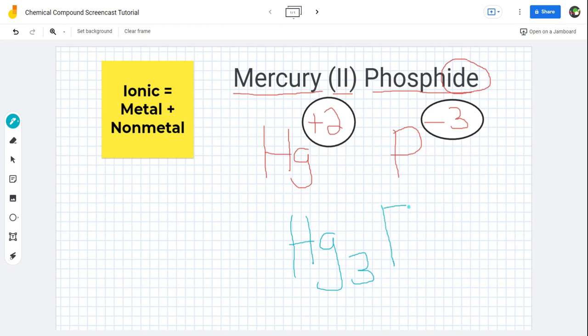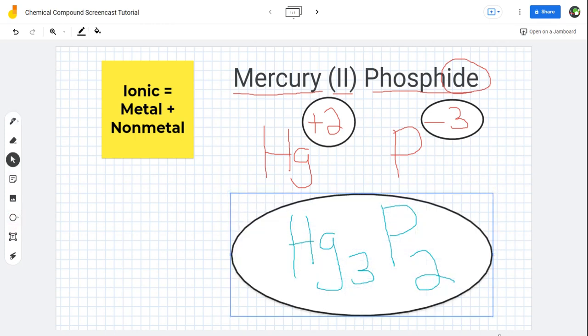And phosphorus, I need 2 of them. So I'm going to put a subscript of 2. This is my finished chemical equation for mercury to phosphide.